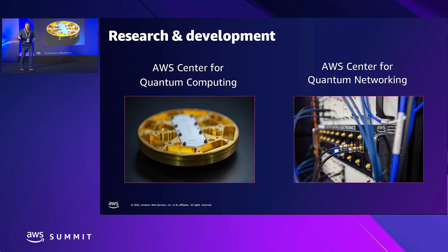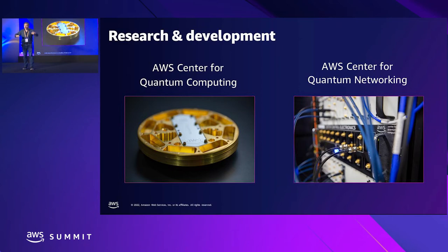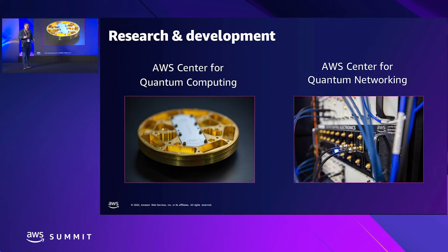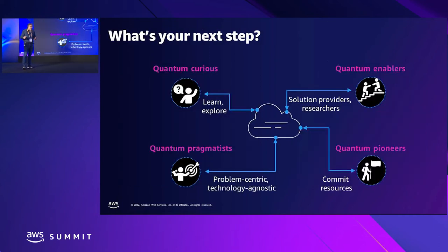Second, we recently launched the AWS Center for Quantum Networking, where we are researching and building quantum networks — connecting quantum computers together to scale horizontally and potentially support applications related to information security. These are R&D initiatives we are currently working on.